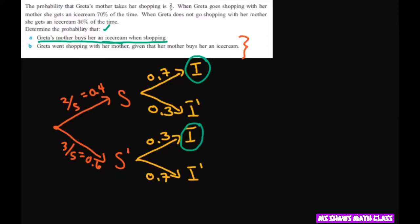We just want to know about ice cream, so that's going to be 0.4 times 0.7, and this one's going to be 0.6 times 0.3.